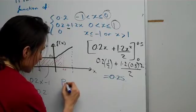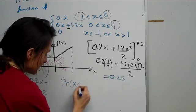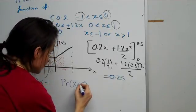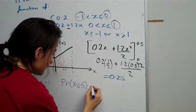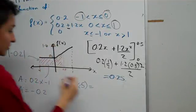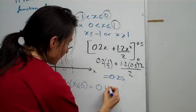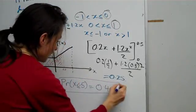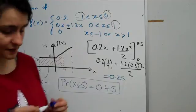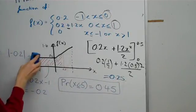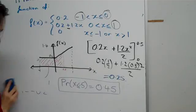So, what we're going to do is just add the magnitudes of those. So, the probability, finally, that x is less than or equal to 0.5, is equal to 0.25 + 0.2, which should be equal to 0.45. So that's your first answer.